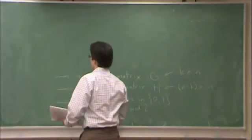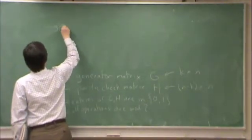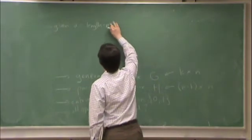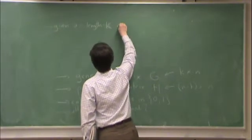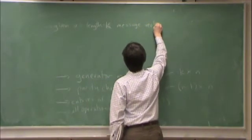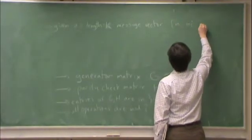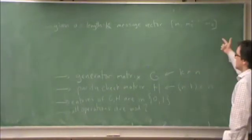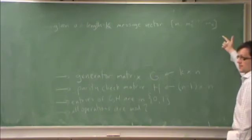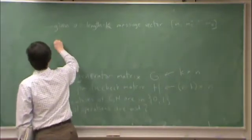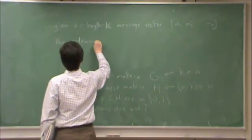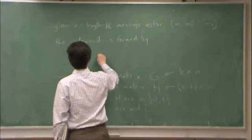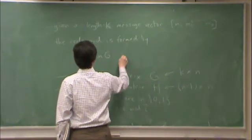So the generator does this. Given length k message vector, m1, m2, mk. So remember there are k information bits. So this vector of k bits contains the message that we're sending. The code word is formed by the following operation, m times G. The output is the code word c.